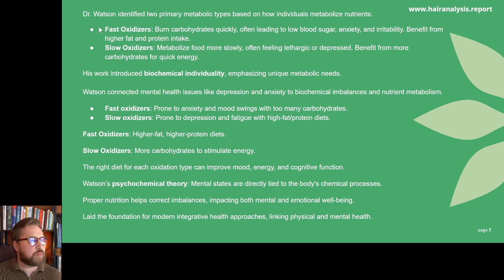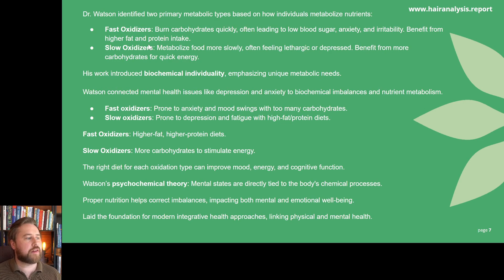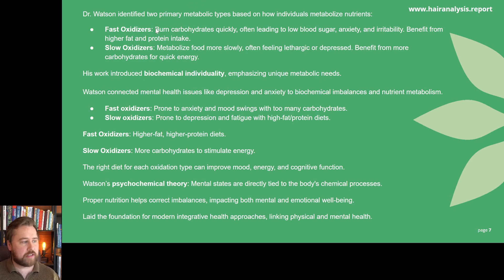Dr. Watson identified two primary metabolic types based on how individuals metabolize nutrients: fast oxidizers and slow oxidizers. What Dr. Watson discovered is that fast oxidizers burn carbohydrates quickly, often leading to low blood sugar, anxiety and irritability, and they benefit from higher fat and protein intake. Slow oxidizers metabolize food more slowly, often feel lethargic or depressed, and they benefit more from carbohydrates for quick energy.